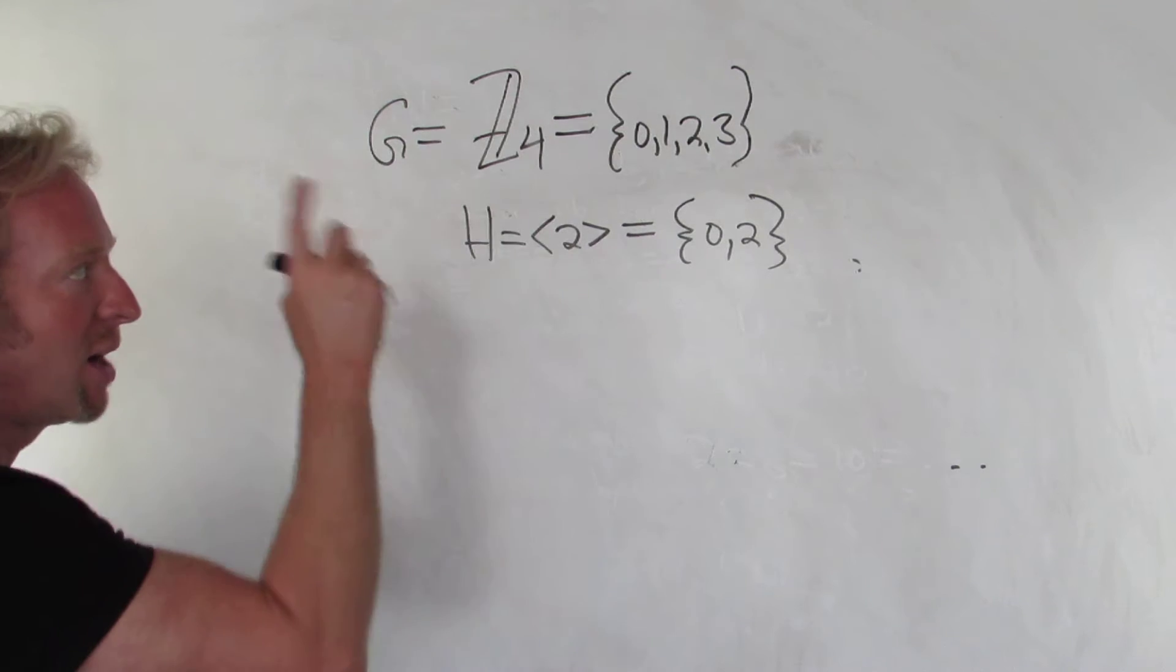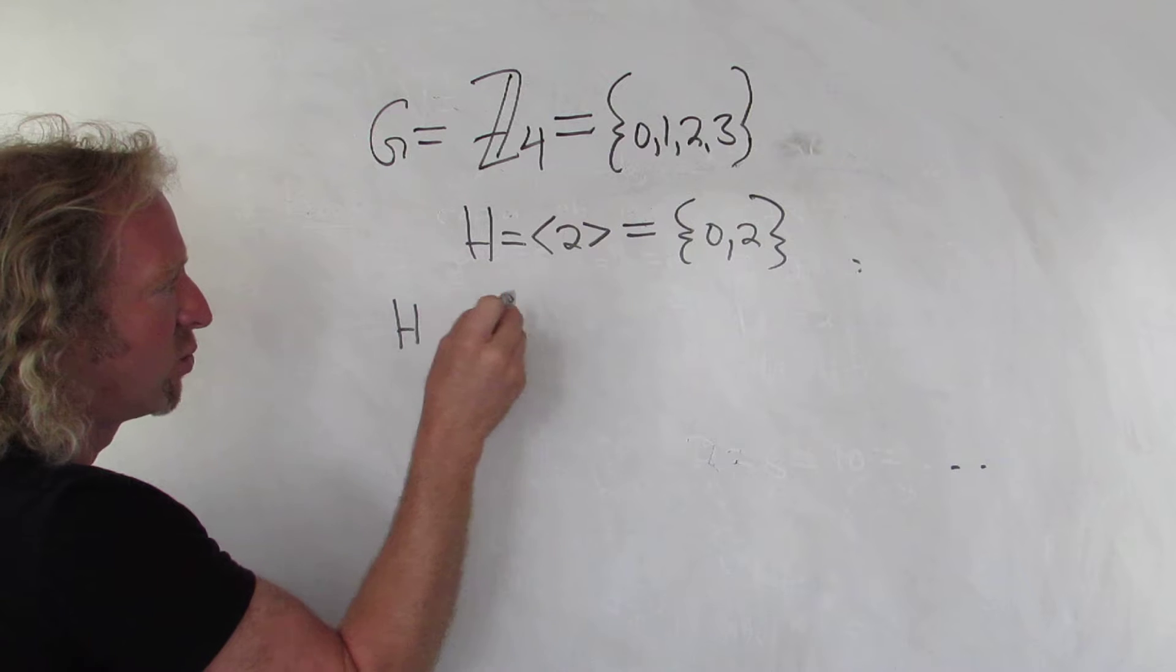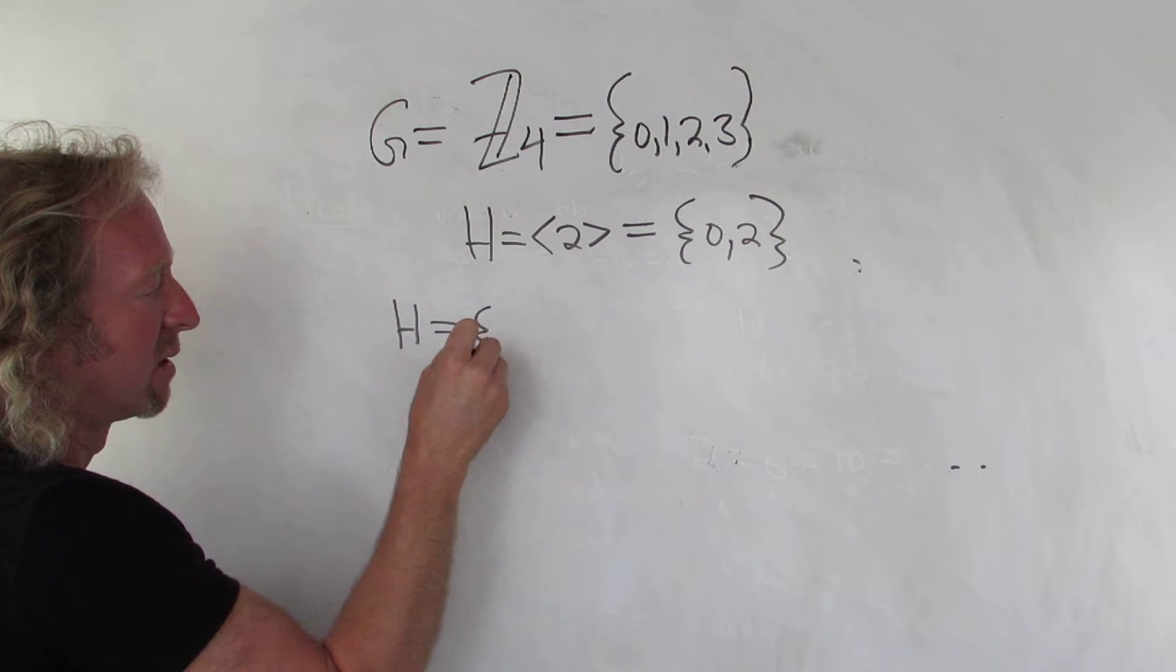So how do you compute cosets? Well, you just keep adding. Here the operation is addition modulo 4, so you add. So H is one group, that's one of the cosets, it's 0, 2.